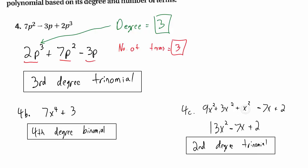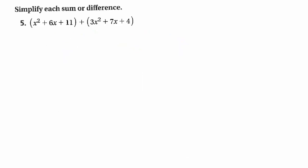Once you simplify, there are only three terms, so it's a trinomial. The highest exponent — the highest degree — is 2.